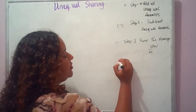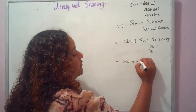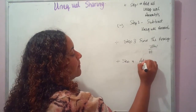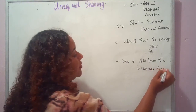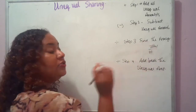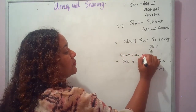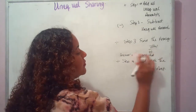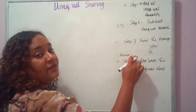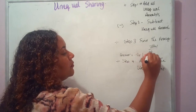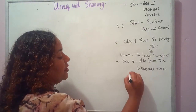Depending on the question, you may need step four, where you add back the unequal amount. The difference between step three and step four: the answer from step three gives you the person who receives the lesser amount, while step four gives you the person who receives the greater amount or has the greater value.